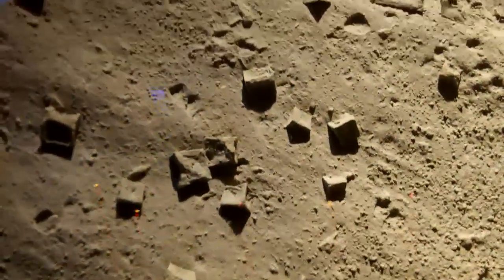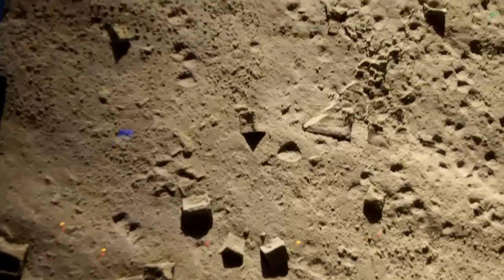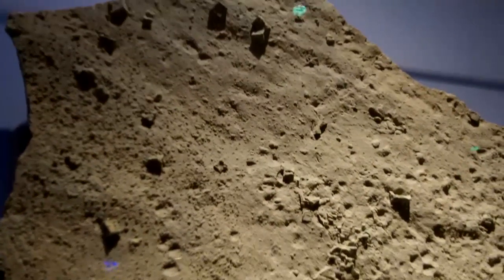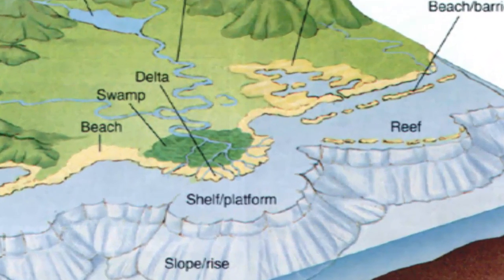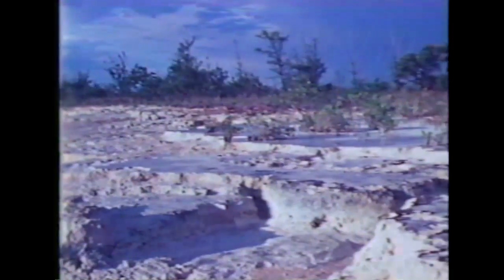Otherwise, evaporites are more common along hotter, drier shorelines, and where bays can get cut off and evaporate faster than the water input. If the bays are sheltered and have enough water and nutrients, limestone can also accumulate. But as we noted before, limestone formation requires little to no clastic input, thus we are specifying sheltered bays.